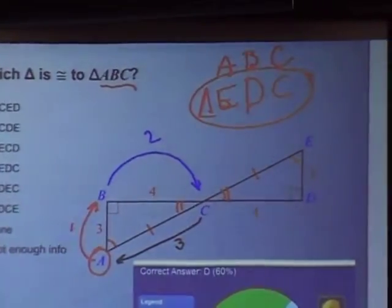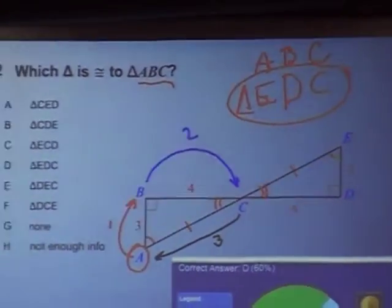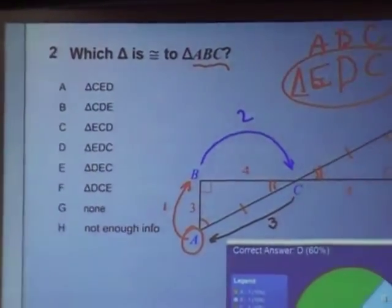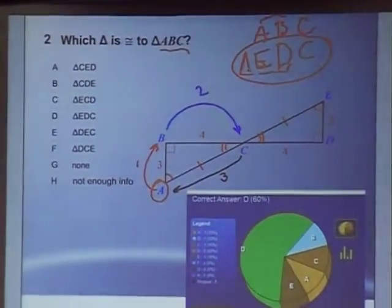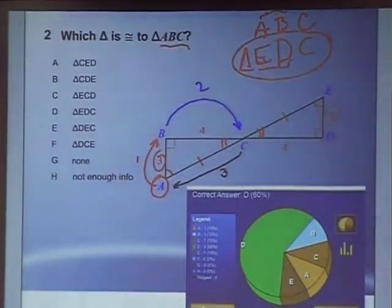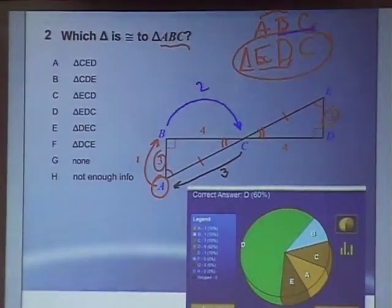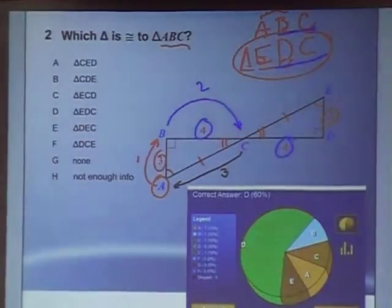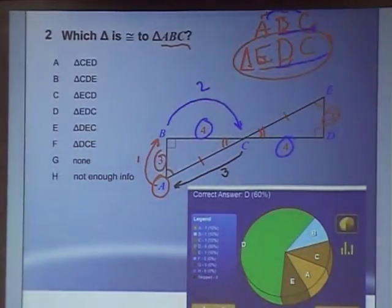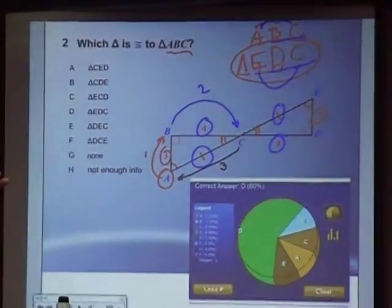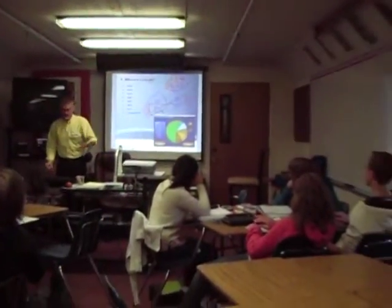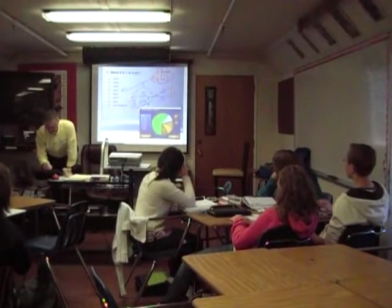Now I've checked the angles. What do I also need to check? The sides. Let's do that same trick. AB had better be congruent with ED — is that true? Yes — three and three. Now I better have BC congruent to DC. BC is four, DC is four — that works. And AC, right here, had better be congruent to EC. So now we've verified that all corresponding angles are congruent and all corresponding sides are congruent. That works. The correct answer is D.